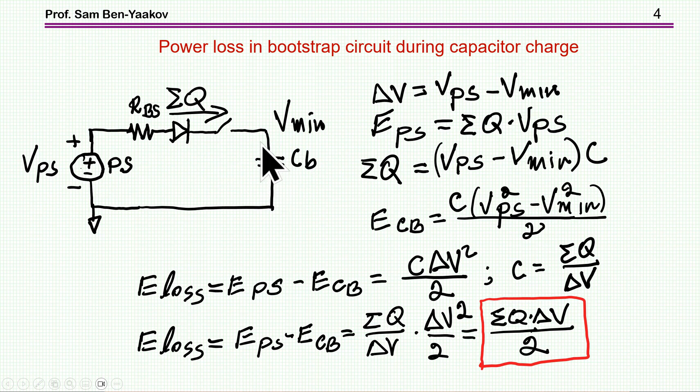Originally, the capacitor was charged to V_PS, but it delivered charge to the gate and power to the driver, so the voltage dropped to V_minimum. I'm defining this delta V as this difference. I'm going now to derive the equation for the loss in this process. This is actually well known, but I think it's useful to understand how this expression or equation is derived.